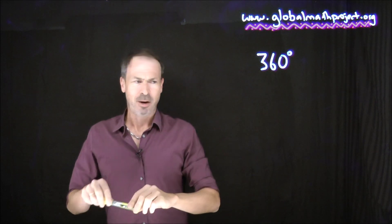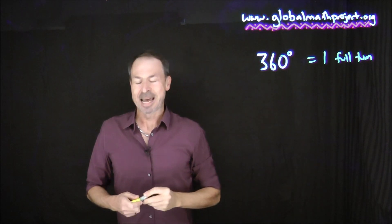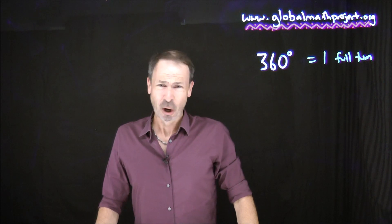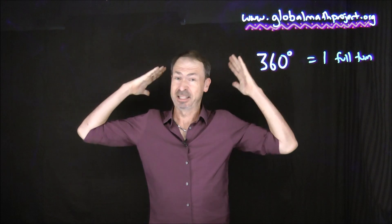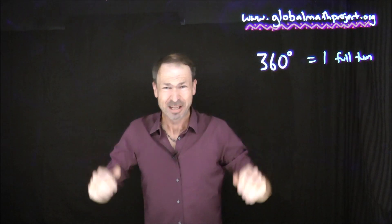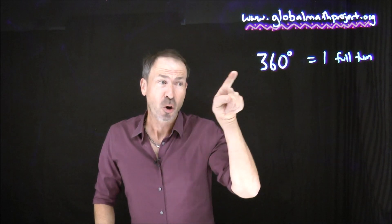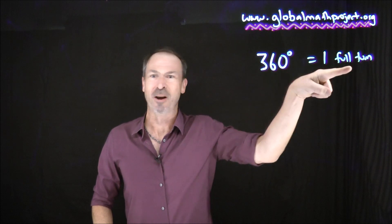So what is this number 360? We like to say that one full turn corresponds to 360 degrees of turning. Which begs the question: who chose the number 360 for one full turn? Why that number? If you had to think of a number out of the blue, would you naturally come up with 360? That's actually awfully strange. We'll talk about who chose that number and why in the next lesson.